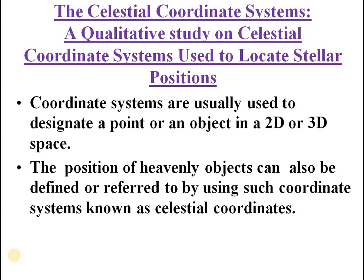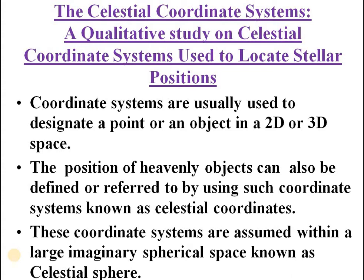For tracking the motion of objects — it may be a satellite, a planet, an asteroid, comets, or anything like that — in order to track them, we need some unique coordinate system. Only then we can transfer the observation to some other person. Or if you want to record the coordinates or the presence of an object, we need some reference frames. Essentially, these are reference frames used to locate objects in space. And these coordinate systems are actually assumed or imagined within a large spherical space. That imaginary spherical space is called a celestial sphere.